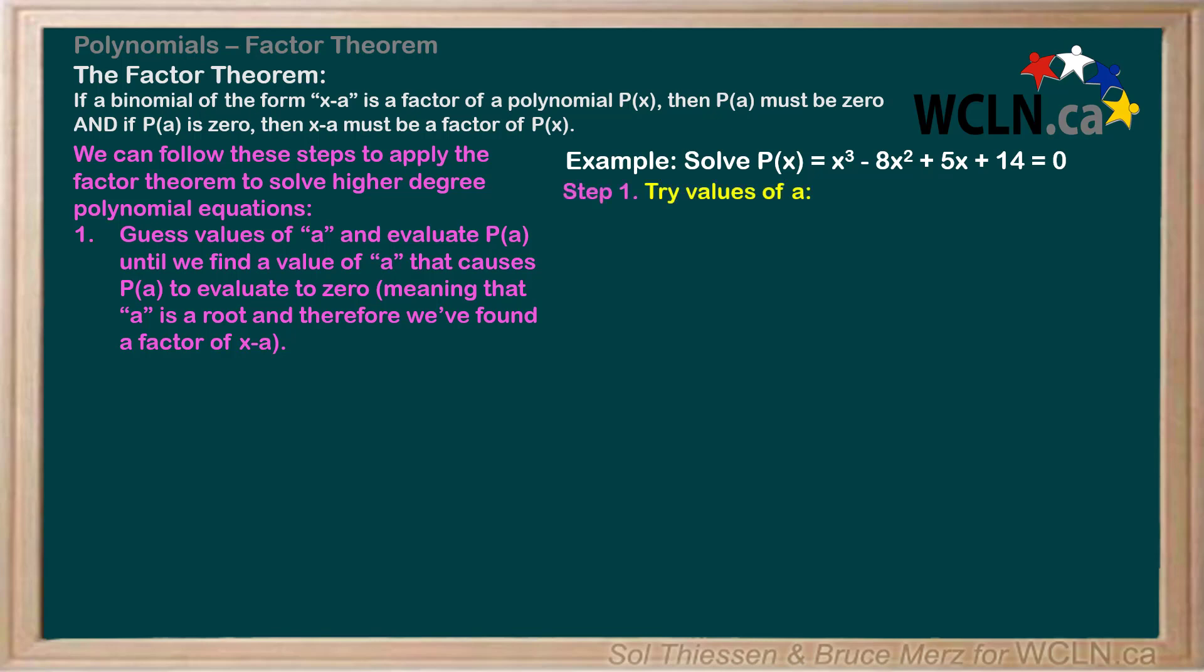Let's carry out step 1 on our example and try values of a. How about we start by guessing values that are easy to check, like 1 and negative 1. Starting with 1, we substitute 1 in for all the x's in our polynomial. 1 cubed is 1, negative 8 times 1 squared is negative 8, 5 times 1 is 5, and the 14 stays as is.